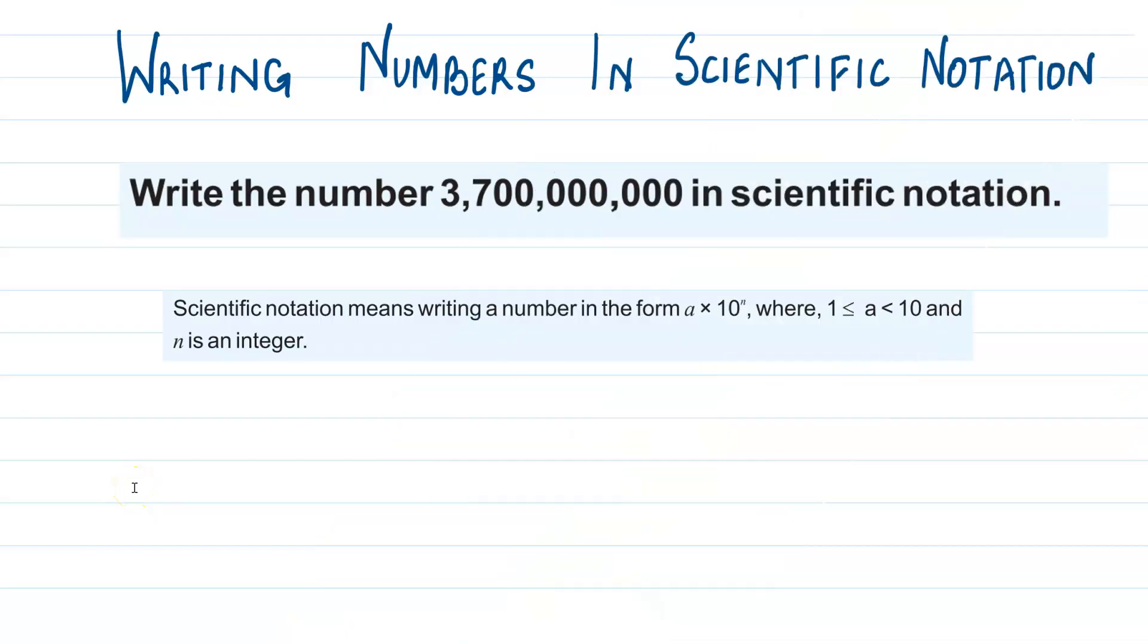Hello everyone, welcome to my channel. In this video we will learn how to write numbers in their scientific notation. So we have to write a very big number, 3,700,000,000 into its scientific notation.